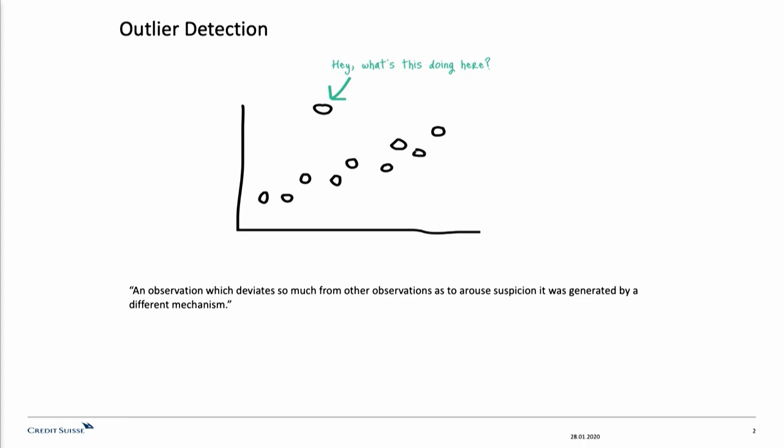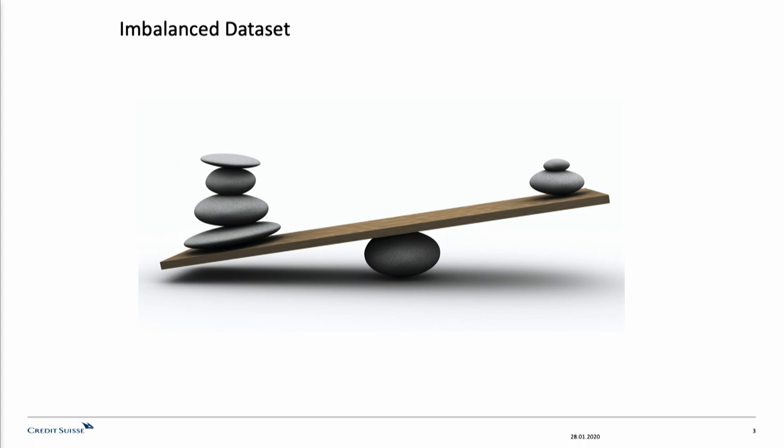Now, in the real world, abnormal cases are usually much rarer than normal cases. So data is usually skewed toward negative samples. Also, it is very expensive and a long process to acquire labels for all classes.